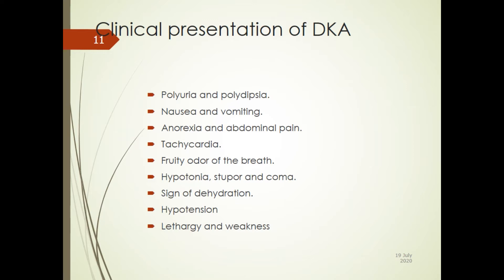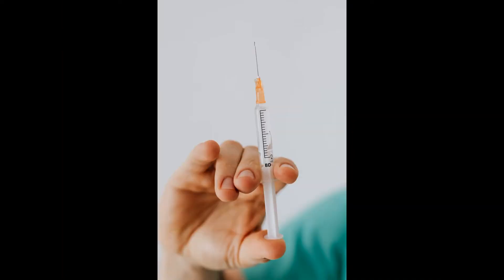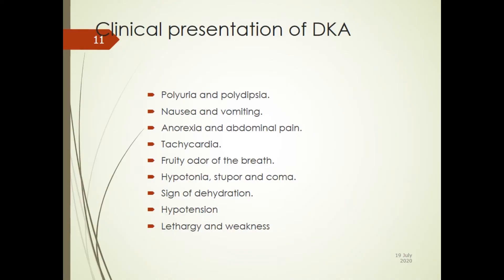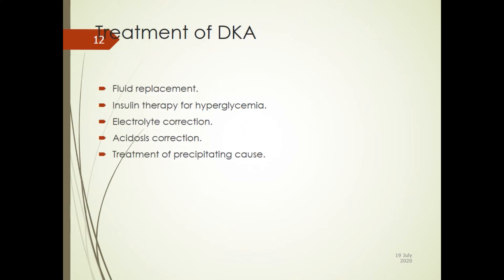When you see these patients, look out for certain features. If you can take history, they may report polyuria, polydipsia, and polyphagia — the classical symptoms. There will also be nausea and vomiting, particularly in type 1s, anorexia, and abdominal pain. On examination: tachycardia, a fruity odor of the breath from ketones, hypotonia, stupor, and possibly coma. There is profound weakness because the cells are not getting enough energy, and significant dehydration.